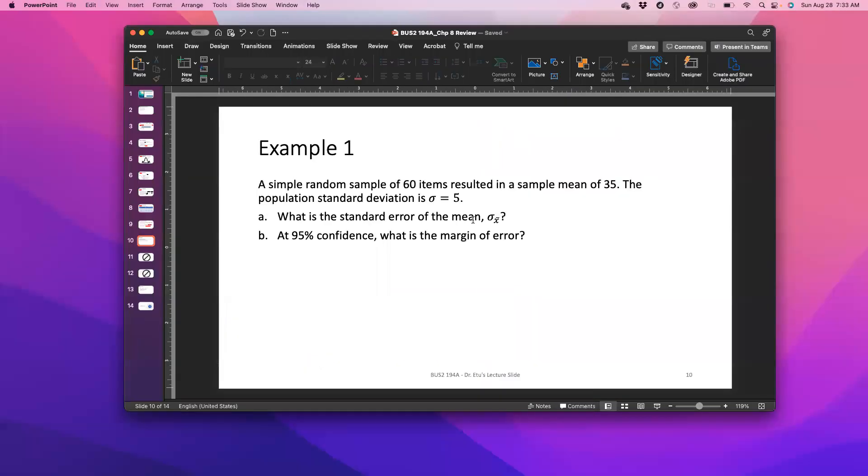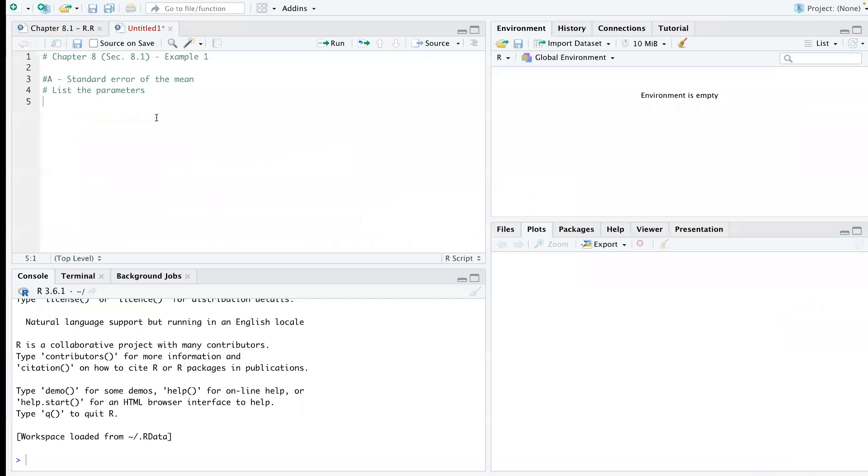So the parameters from the question, we're given different parameters. The first parameter is the sample size, which is 60 items. The next parameter is the sample mean, that's X bar, which is 35. And then sigma, which is the population standard deviation, which is 5. So we need to list out all those parameters.